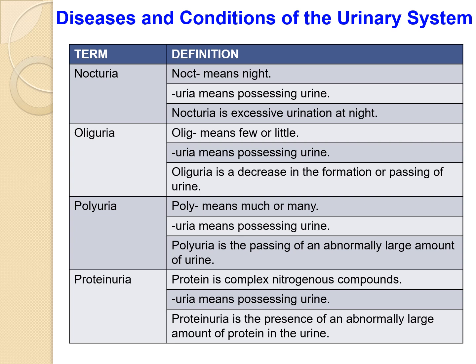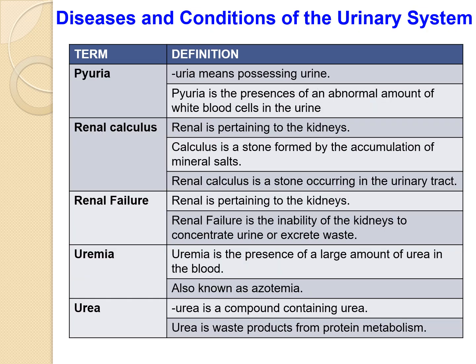Proteinuria: protein is a complex nitrogenous compound, and proteinuria is the presence of an abnormally large amount of protein in the urine. Pyuria is the presence of an abnormal amount of white blood cells in the urine. Renal calculus: 'renal' means pertinent to kidney, and a calculus is a stone formed by the accumulation of mineral salts, so a renal calculus is a stone occurring in the urinary tract.